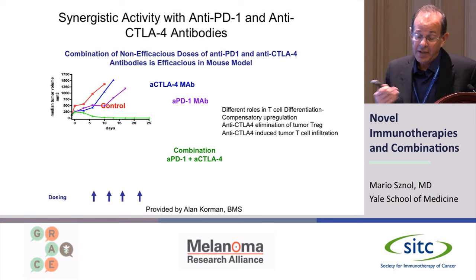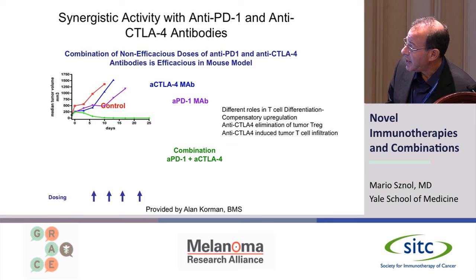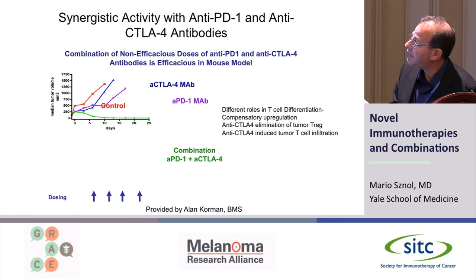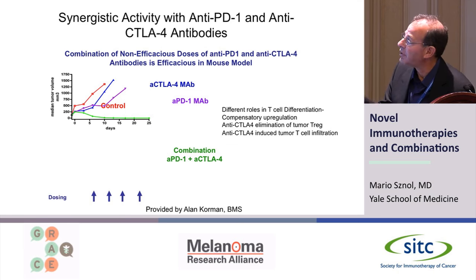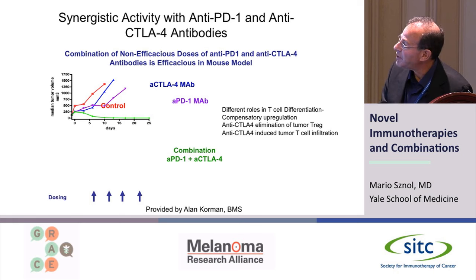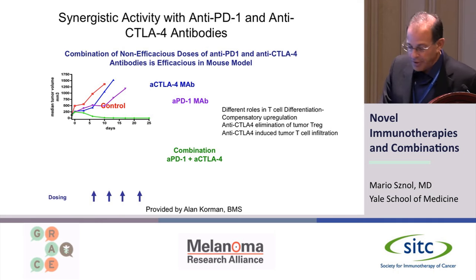For examples of things that have worked: CTLA-4 and PD-1 are two off switches that work in different places in T cell activation. When you block CTLA-4, you not only block an off switch but also kill bad cells in the tumor and somehow drive T cells into it — though we really don't understand the biology. Mouse model data showed that giving one drug had little activity, but giving the two together produced almost synergistic anti-tumor activity — so it was a no-brainer to combine them in the clinic.